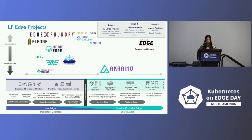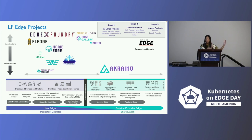ElfEdge currently has 12 projects in three stages. Stage one has at-large projects like Beto, eKuiper, and secure device onboard, located at different layers from application to infrastructure. Stage two growth projects — more mature — include EVE, FLEDGE, HomeEdge, Open Horizon, and State of the Edge. They are all at the growth stage.